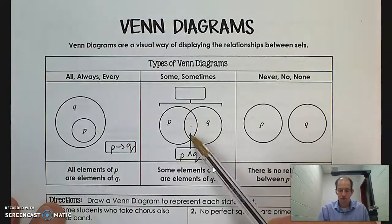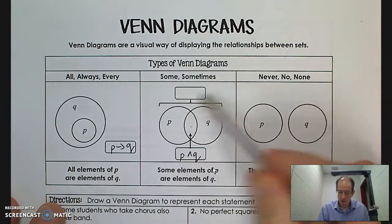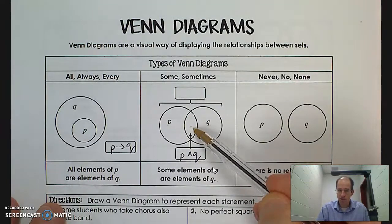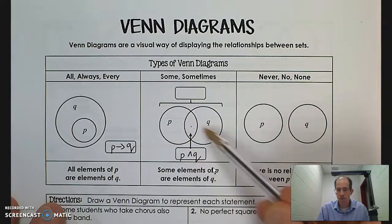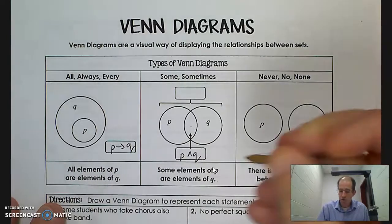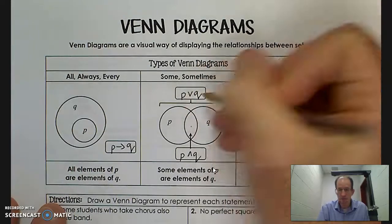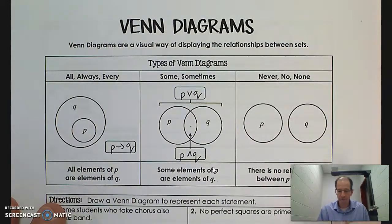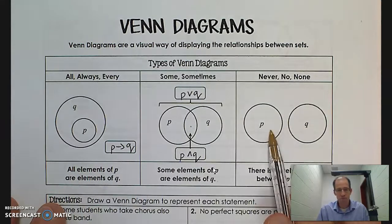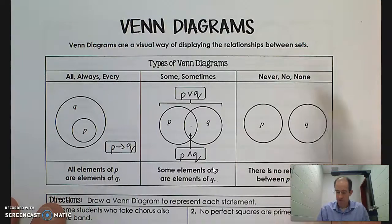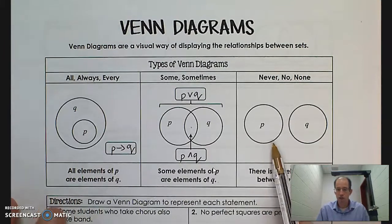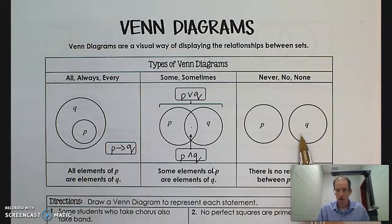The overlapping area represents P and Q. Both circles together, including the section in between, represent P or Q — a disjunction — because if I'm either in P or in Q, I can be anywhere in that region. Finally, if they never overlap, if you can never be in P and Q at the same time, you'll use the words no, none, or never. There's no relationship between P and Q, so you draw two circles which do not overlap.